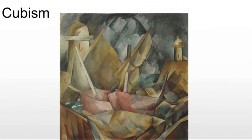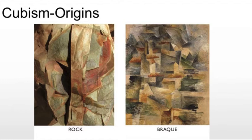The Cubist painters were not bound to copying form, texture, color, or space. Instead, they presented a new reality that depicted radically fragmented objects whose several sides were seen simultaneously. It would be like having an iPhone and seeing the Apple symbol and camera on the back, as well as the home button on the front surface of the screen, all in the same image, even though they're on two different sides.